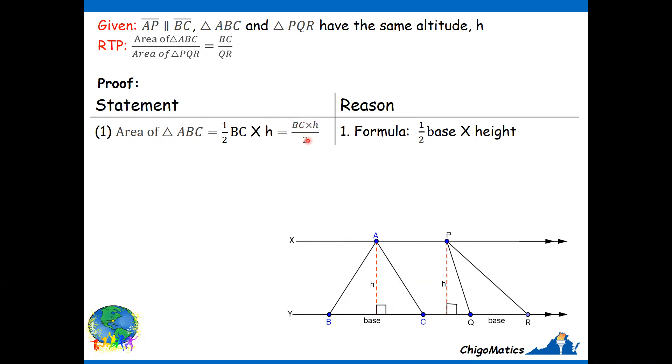Then I'm simply writing it neatly in this format, but it's one and the same thing. I do the same for triangle PQR. This area is half, the base is QR, the height is H. Then I write it neatly as this.